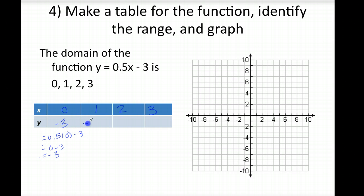Then, here, we have negative 2.5, negative 2, and negative 1.5. And then, we're going to graph these. So, we have 0, negative 3; 1, negative 2.5, which is in between negative 2 and negative 3; 2, negative 2; and then 3, negative 1.5. And once again, since we're given a restricted domain, we do not connect the dots. We're only graphing the corresponding y values with these x values.